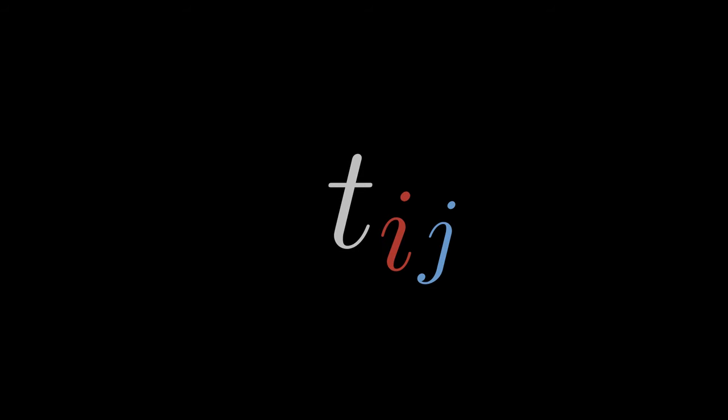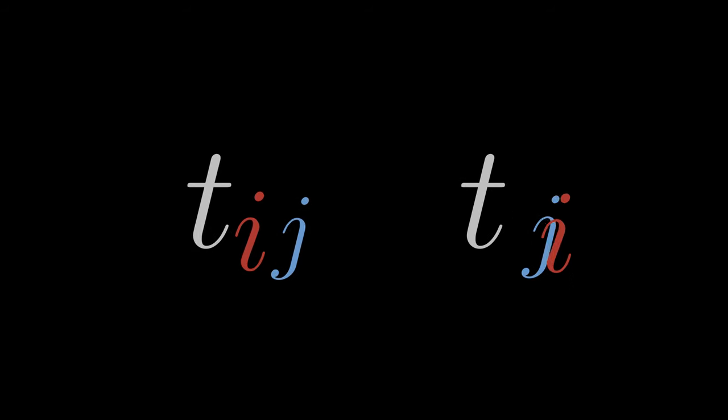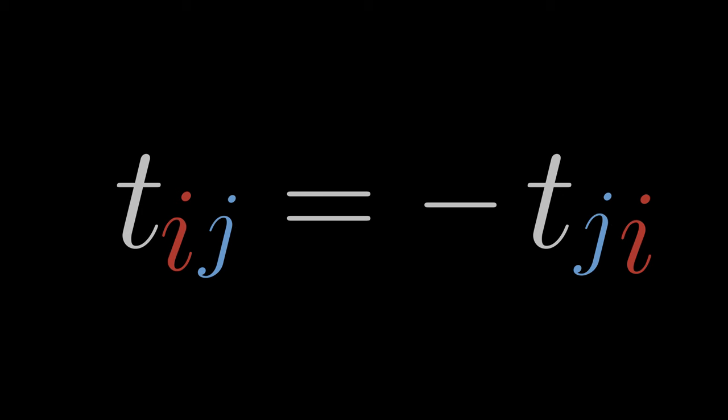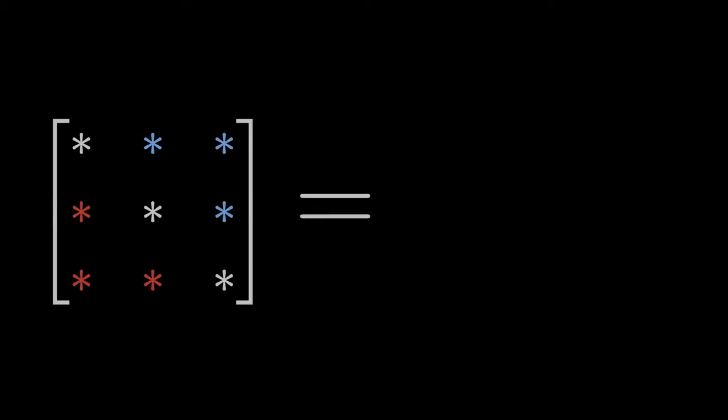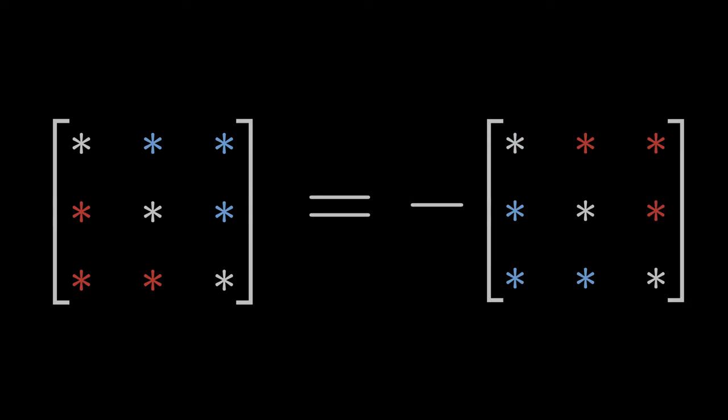However, we will also encounter tensors that are antisymmetric. An antisymmetric tensor changes sign when we swap its indices. If the antisymmetric tensor is represented as a matrix, then it is equal to its negative transpose.